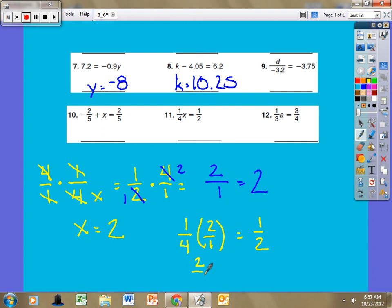One times two is two, four times one is four, two-fourths equals one-half, or two-fourths equals one-half. This can be reduced to one-half is equal to one-half, so that is a check.